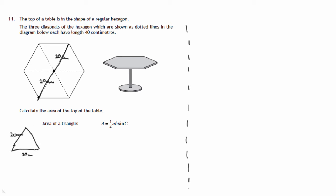for instance like this, by a half of multiply these two sides together times the sine of the angle in between them, which we know is 60 degrees.